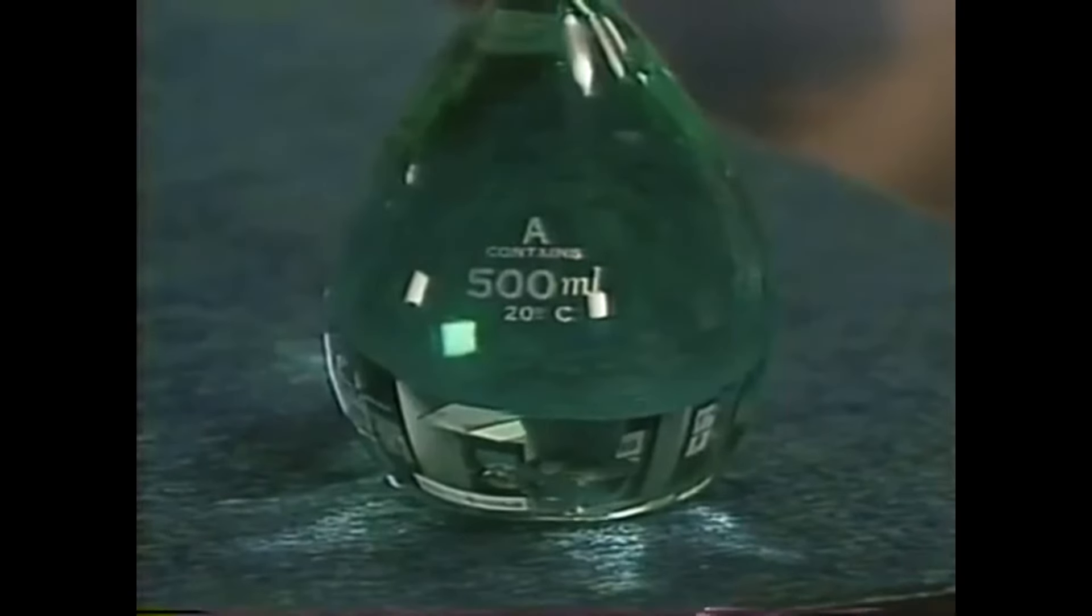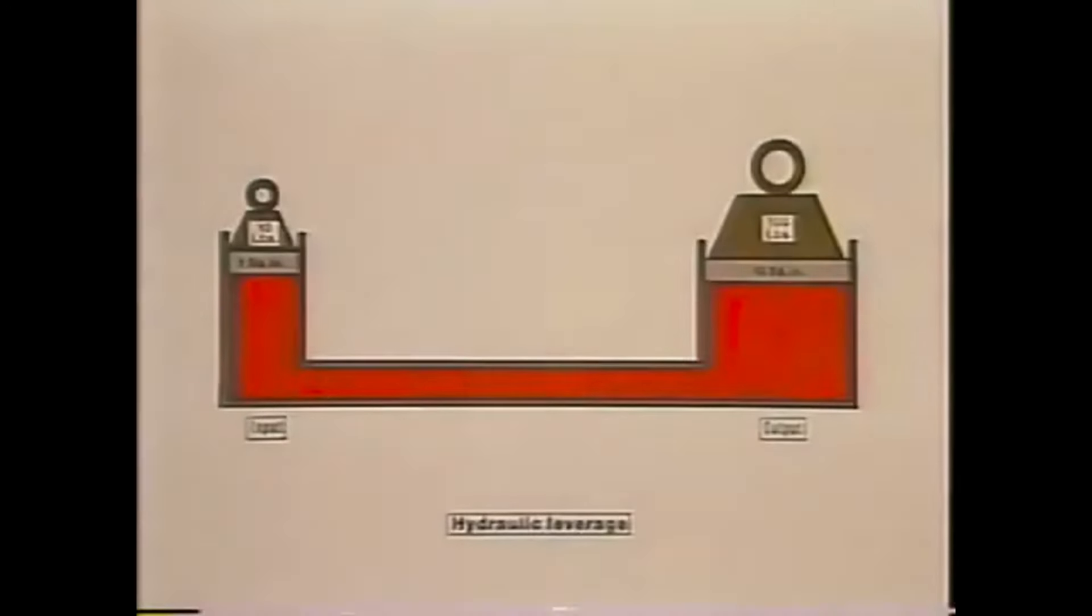Here, let me show you. The classic demonstration of this principle is to fill a small neck jug with fluid and then burst it by applying pressure on the cork. But rather than make a mess here, a more practical example is to show two pistons, one large and one small, interconnected by a pipe or tube and filled with fluid.